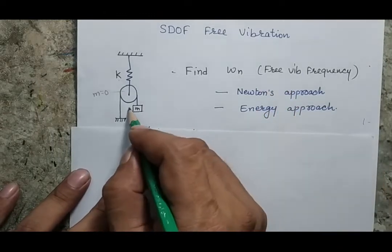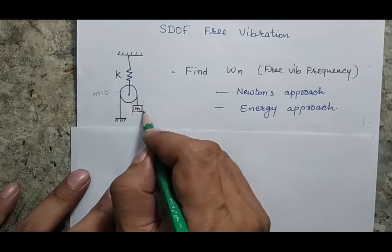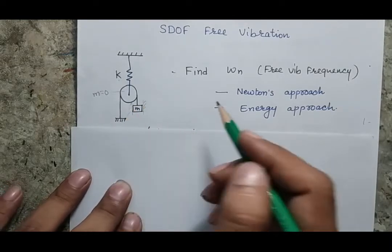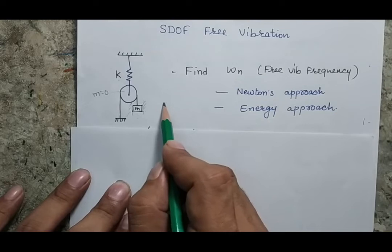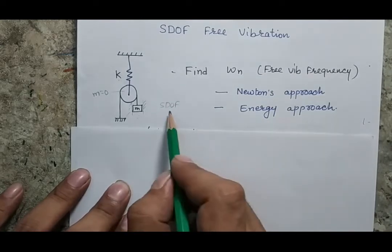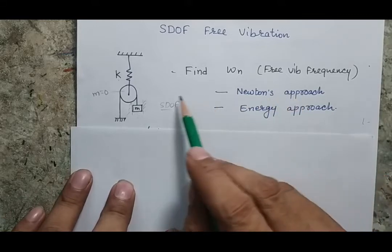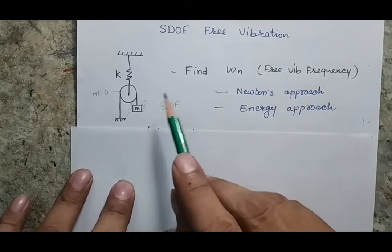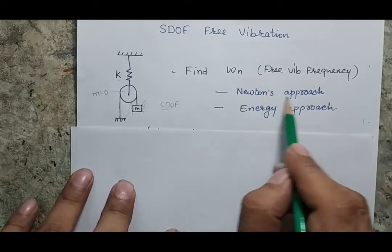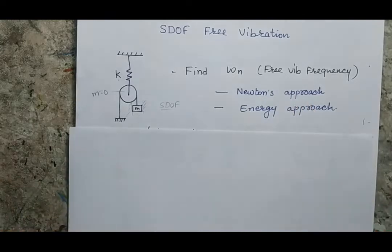First, I am considering that the mass can only move in the vertical direction, so I am considering it as a single degree of freedom system. It is asked that we have to find the natural frequency of this system by Newton's approach as well as by the energy approach.